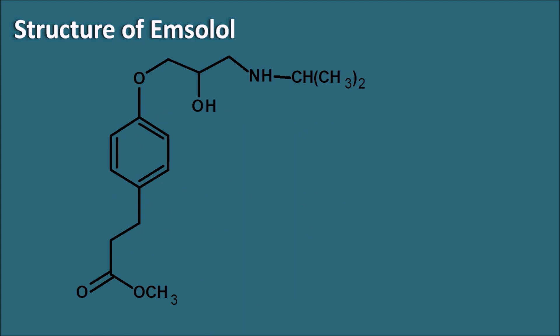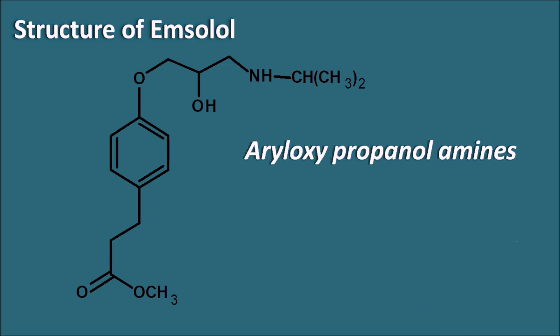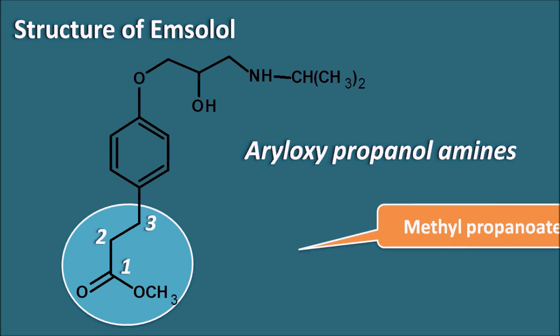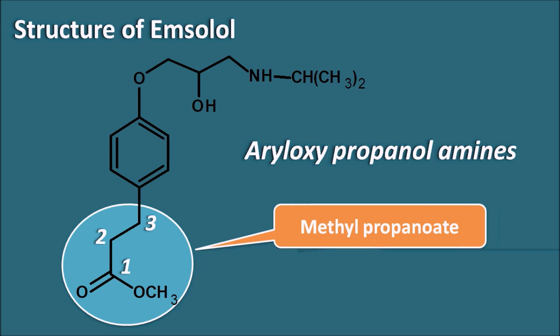This is the structure of esmolol. We can observe an aryl ring — that is, a phenyl group — attached to an oxy group, which is then attached to the propanolamine. That is why these beta blockers are commonly called aryl oxypropanolamines. The group at the para portion of the aryl ring is very important, as it dictates the pharmacokinetic parameters of the beta blocker. Esmolol has a 3-carbon chain — numbered 1, 2, and 3 — giving it a methylpropanoate, which is an ester group at the para portion.